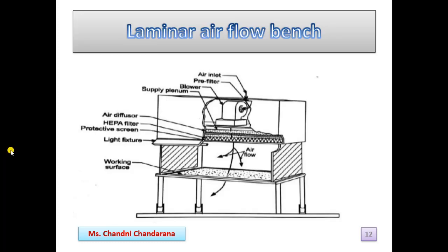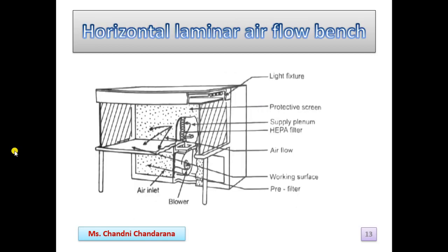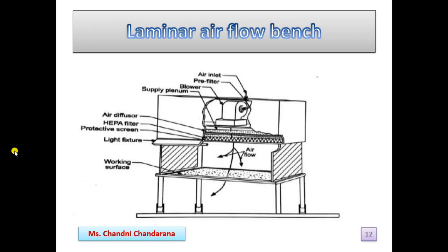The laminar air flow is divided into two types mainly: vertical and horizontal. In the laminar air flow bench, you can observe the air inlet, the filter, the air diffuser, the HEPA filter, the airflow, the working surface, and the light fixture. This is how the laminar air flow bench is arranged in the aseptic or clean area.